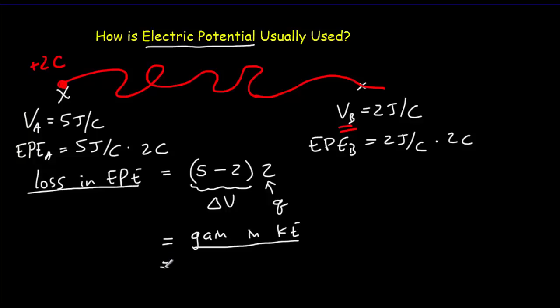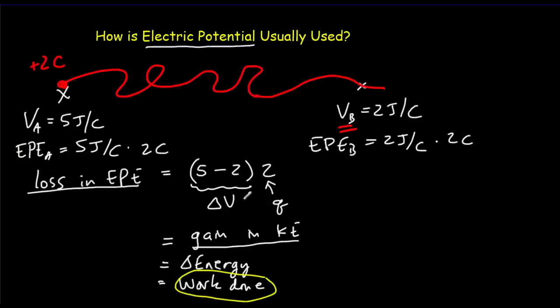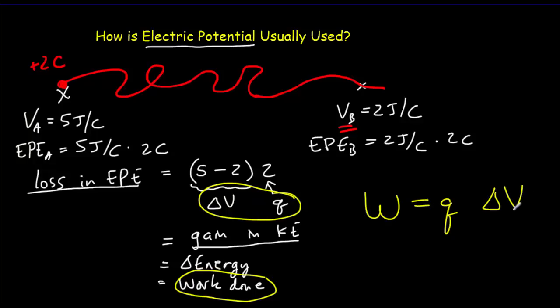In a more general sense, we've got a transformation of energy — from electrical potential energy into kinetic energy. Whenever there's a change in energy, there's got to be work done, and the work done equals the amount of energy transformed. We end up with a fairly simple, very general and useful equation: the work done equals the charge times the change in voltage. I usually like to work in magnitudes and then use physical reasoning to work out the signs.